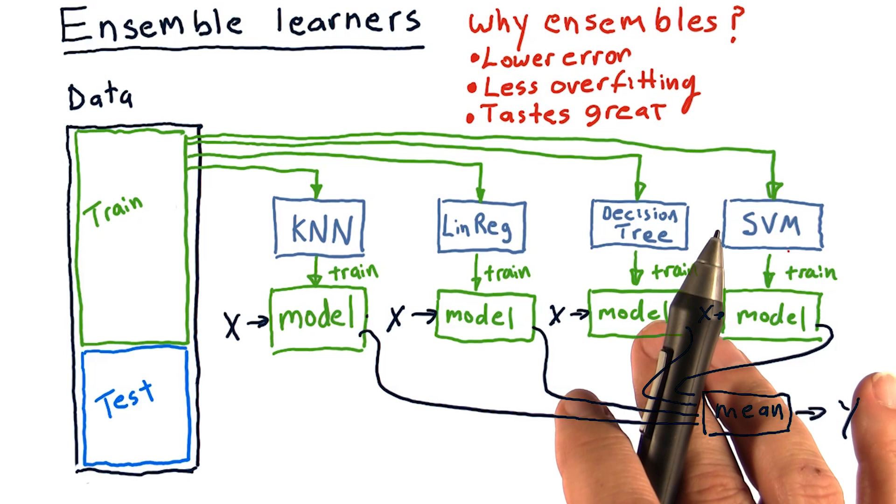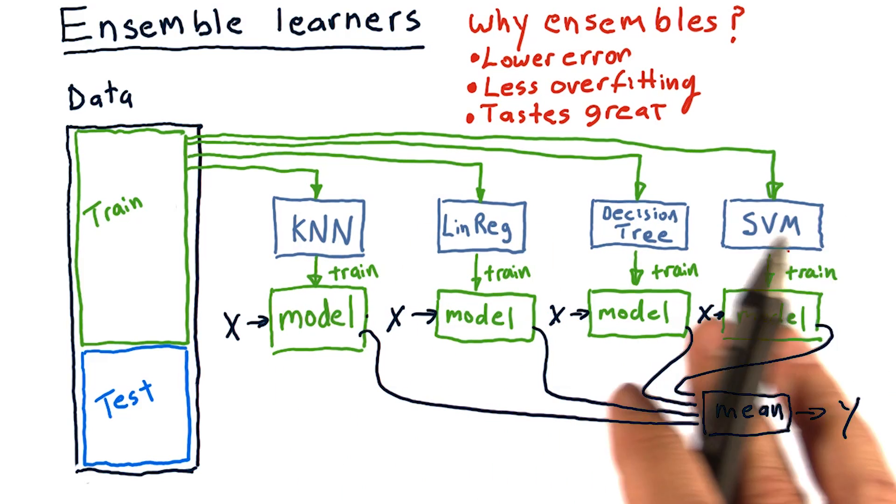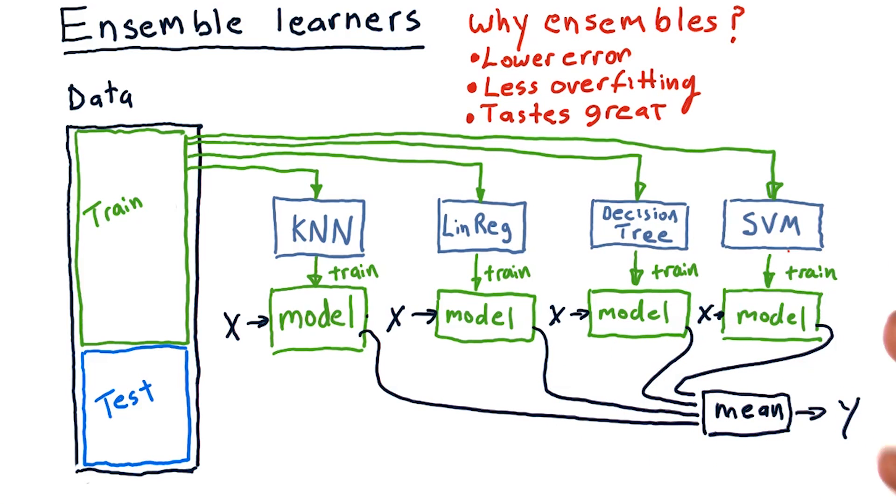KNN has its own kind of bias. Decision trees have their own kind of bias. But when you put them together, you tend to reduce the biases because they're fighting against each other in some sort of way.